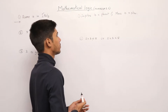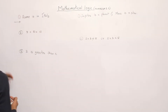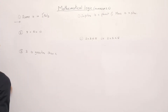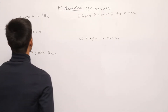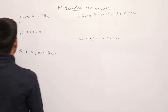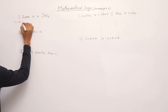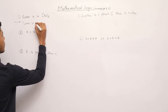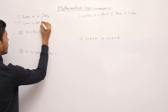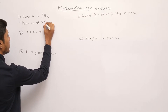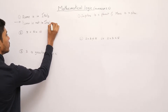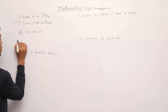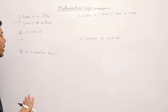Our next exercise is 1.3 and in this we have to write the negations of these statements. The first statement is 'Rome is in Italy', so the negation will be 'Rome is not in Italy'.